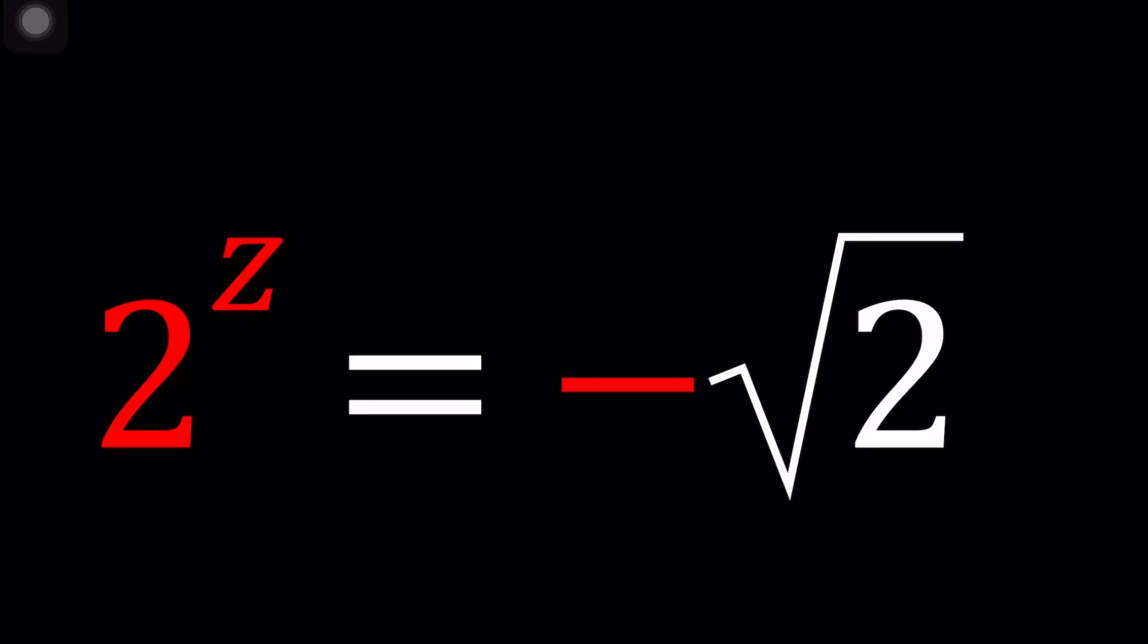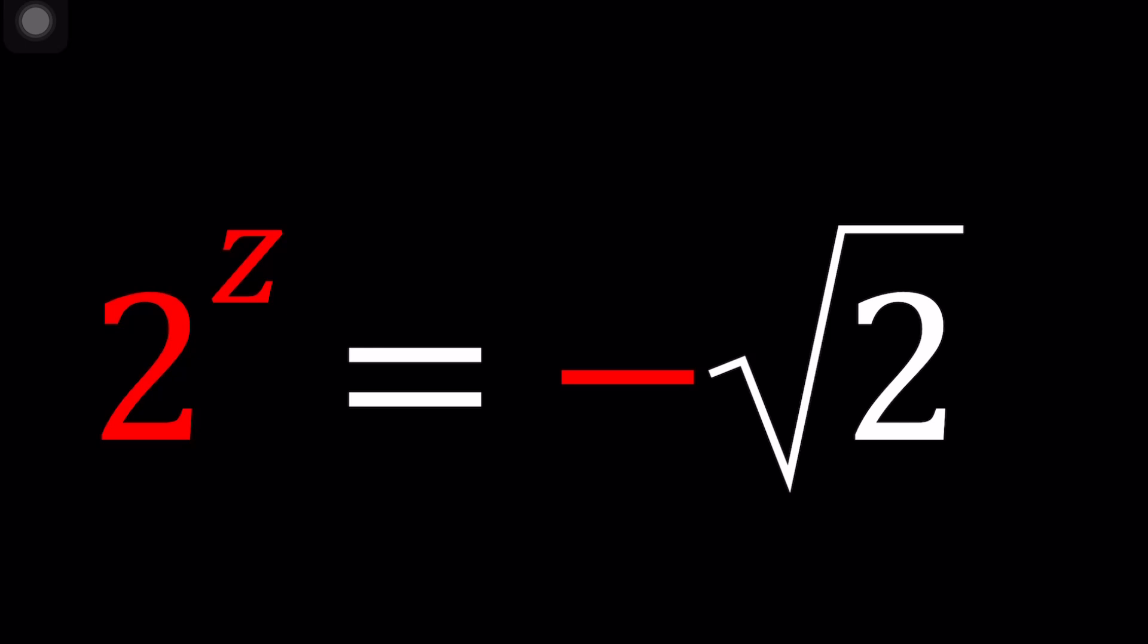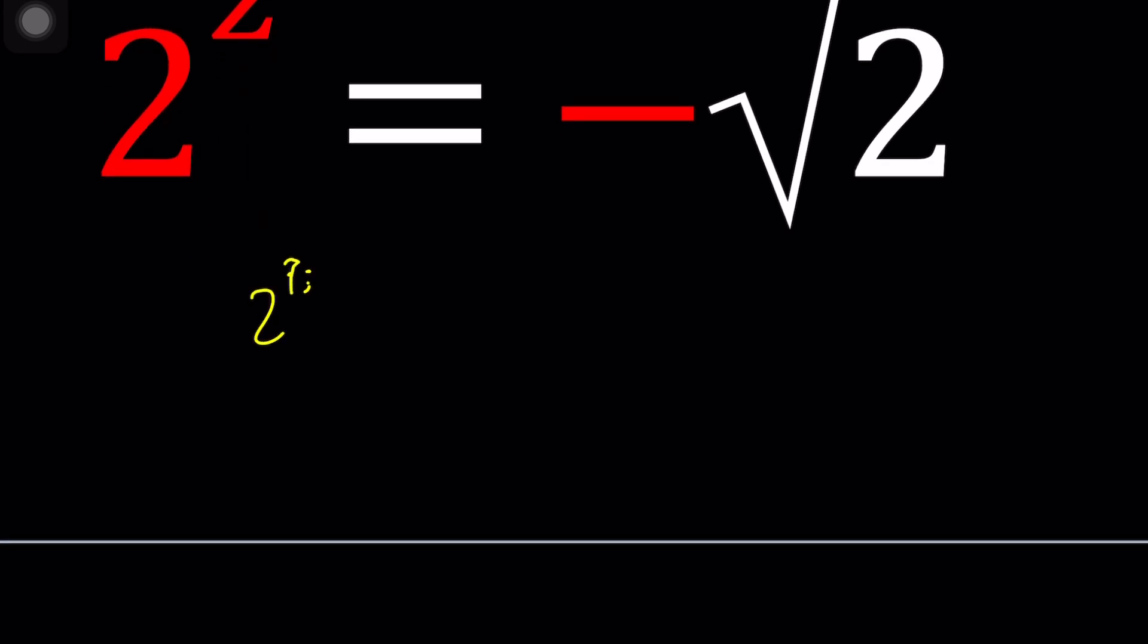Hello everyone, welcome to A plus P I. This channel is all about complex numbers and in this video we're going to be solving a very interesting exponential equation with complex numbers. We have 2 to the power z equals negative square root of 2.